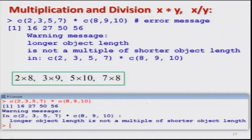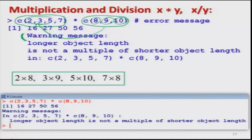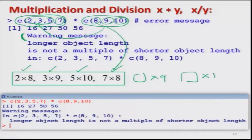If I make this example a bit more complicated: a vector of 4 elements multiplied by another vector of only 3 elements. Since 3 is not an exact multiple of 4, I get a warning message again. The 3 values 8, 9, and 10 are multiplied with the first 3 values 2, 3, and 5. Then for the fourth value 7, it is multiplied only by 8, but there are no values left for positions corresponding to 9 and 10. That is why we get the warning. Always be careful when playing with vectors and matrices.